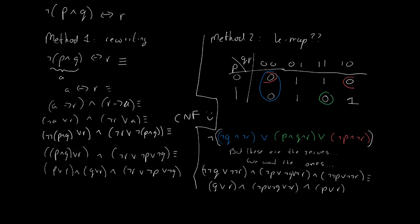So there we go. We can also use Karnaugh maps to find a CNF form. And again, for our course, both methods are totally acceptable. Pick whichever one you prefer. We have no preference.